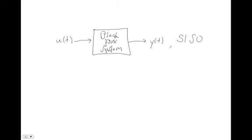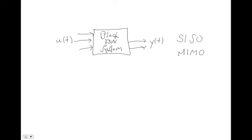In this class, we're actually going to consider the case where you have multiple inputs and multiple outputs. So we're going to start considering MIMO systems — multiple input, multiple output. For this system, instead of having one input we have three inputs, and instead of having one output we have two outputs. These are completely arbitrary numbers.